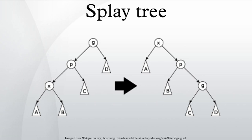Zig-Zig step. This step is done when P is not the root and X and P are either both right children or are both left children. The picture below shows the case where X and P are both left children. The tree is rotated on the edge joining P with its parent G, then rotated on the edge joining X with P.